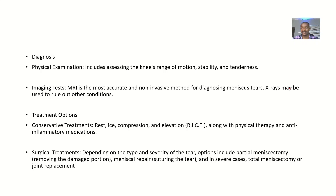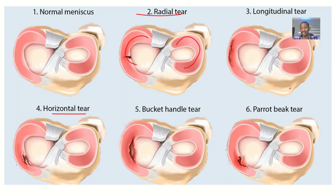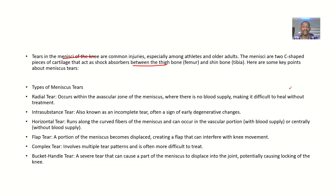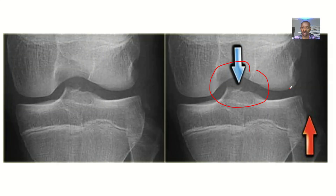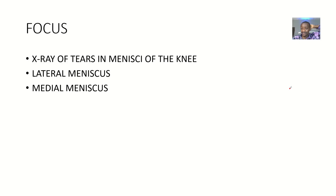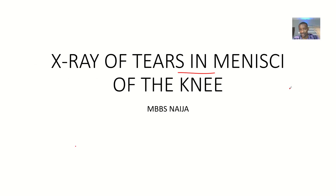Diagnosis involves the imaging being shown here. Treatment options include conservative treatments or surgical treatments — either one could be appropriate. This is how an x-ray of a tear in the meniscus of the knee will actually look like.